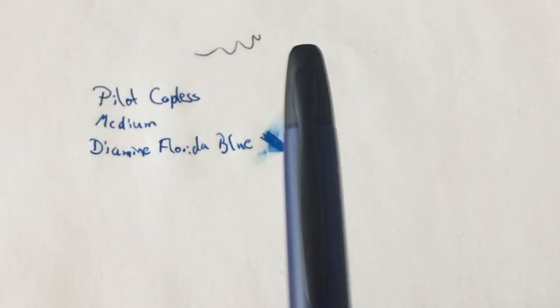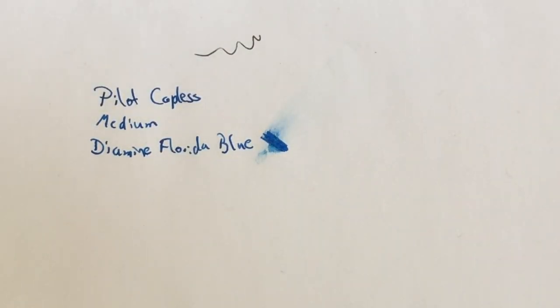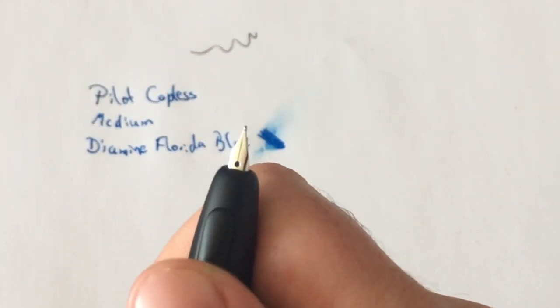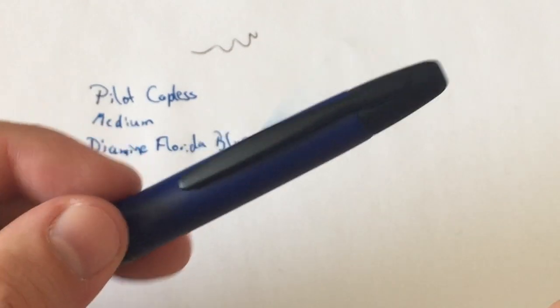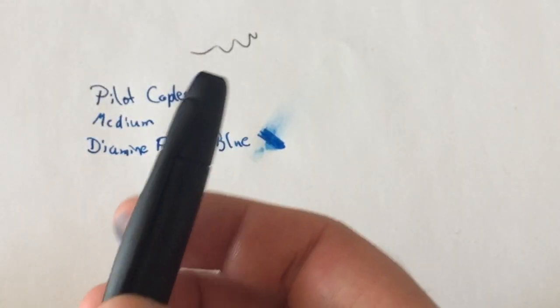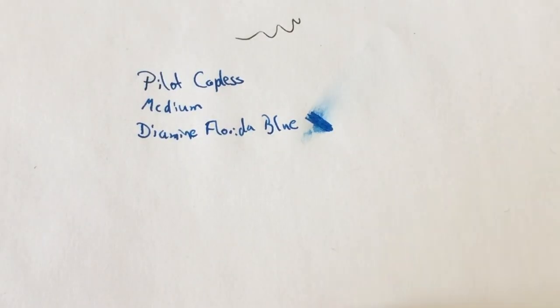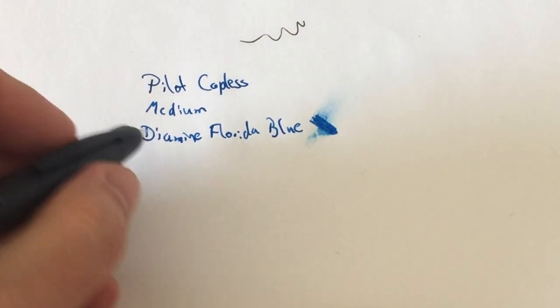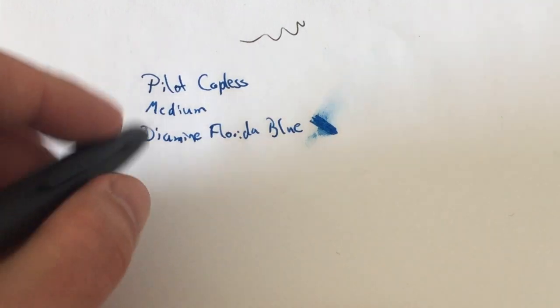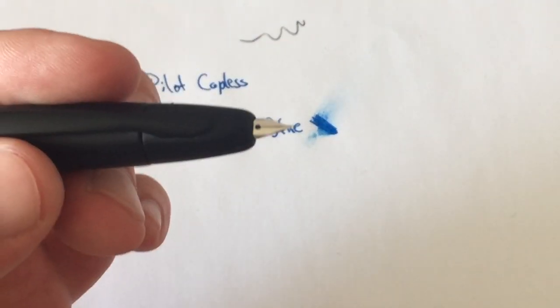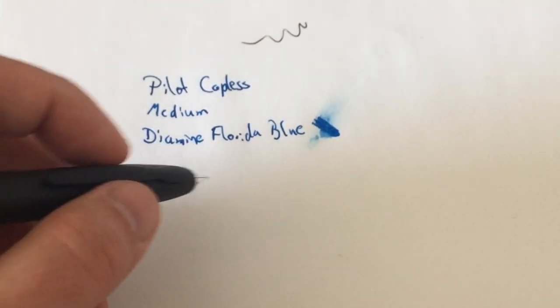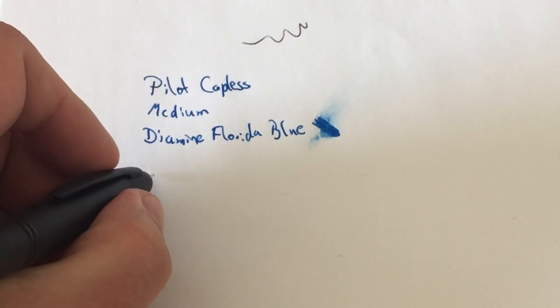This here is a loaner. I also have my own Vanishing Point or Capless. I have the matte black here, and that matte black here has a fine nib. And I just thought now that I have that loaner here with a medium nib and I have my own one with a fine nib, I'm going to do a review about that at another point in time, probably after I've used it for a while. I may demonstrate for you the line width difference. I've also inked that with Diamine Florida Blue, by the way, so that we are consistent here.